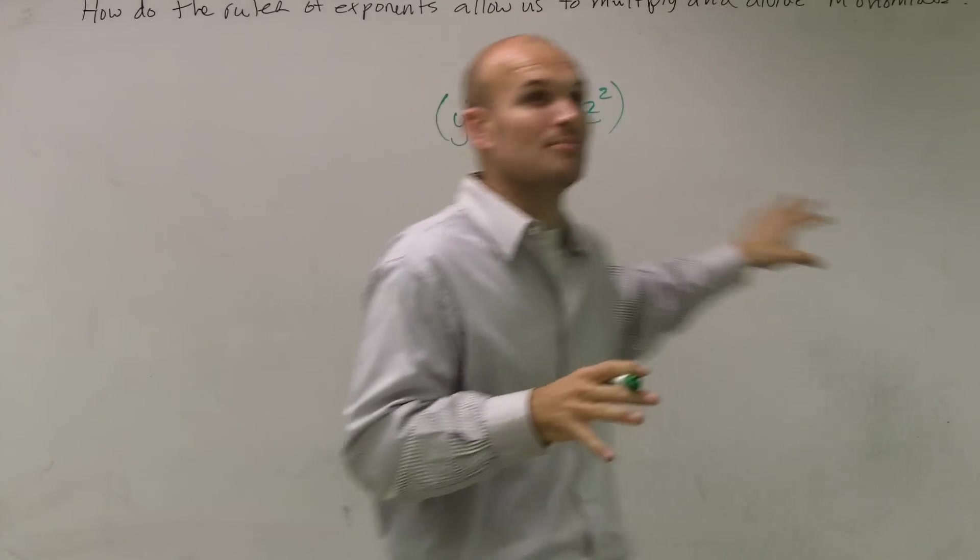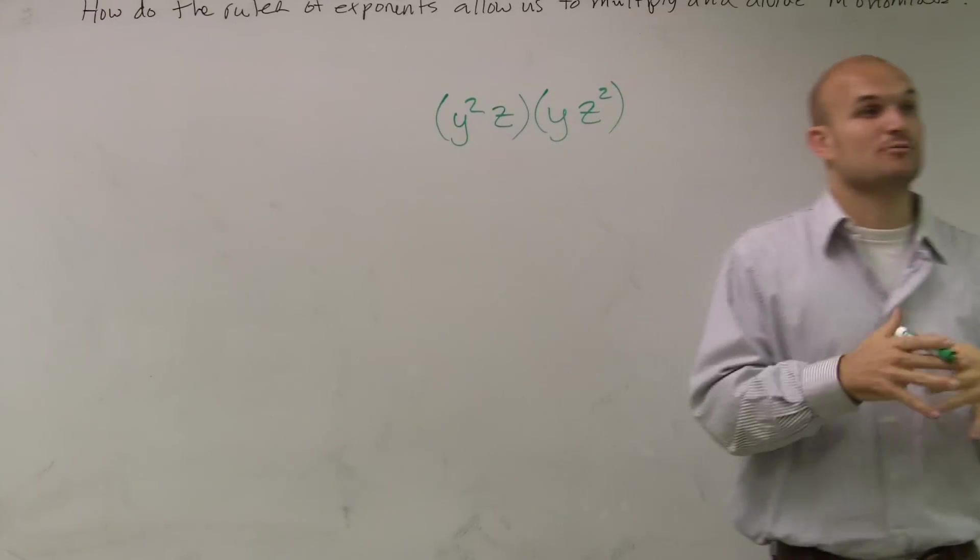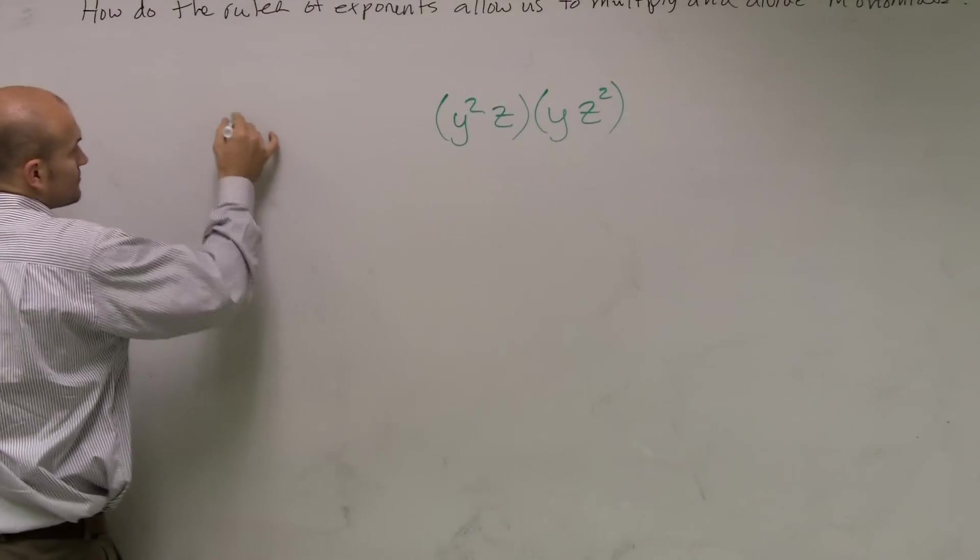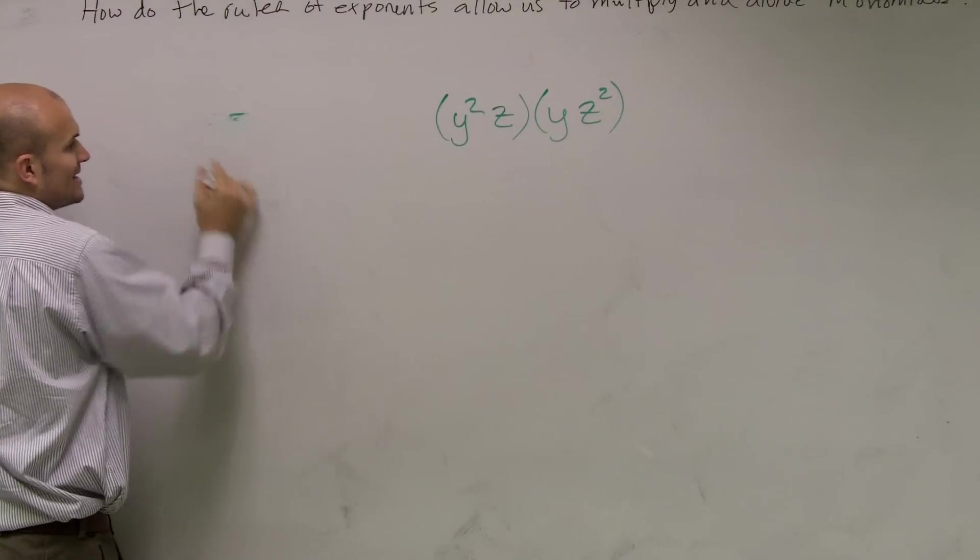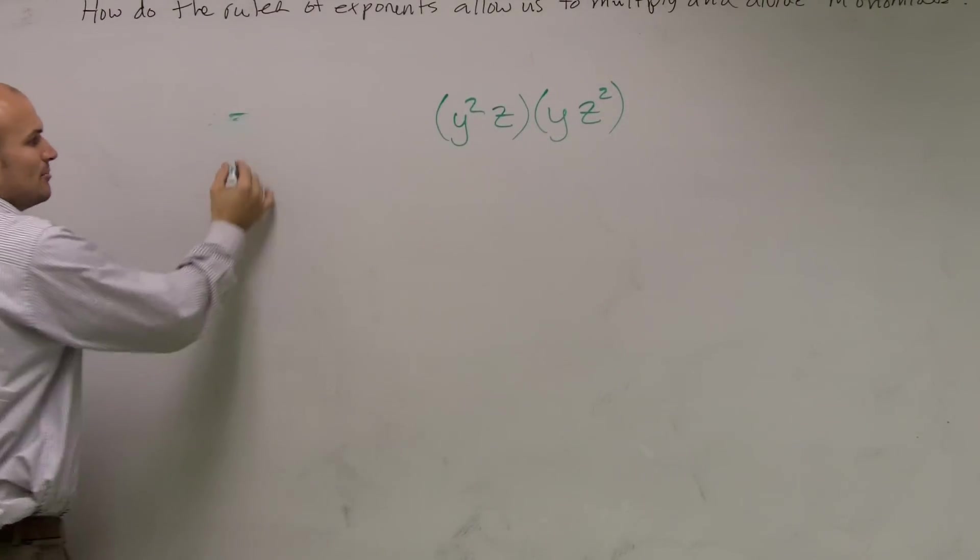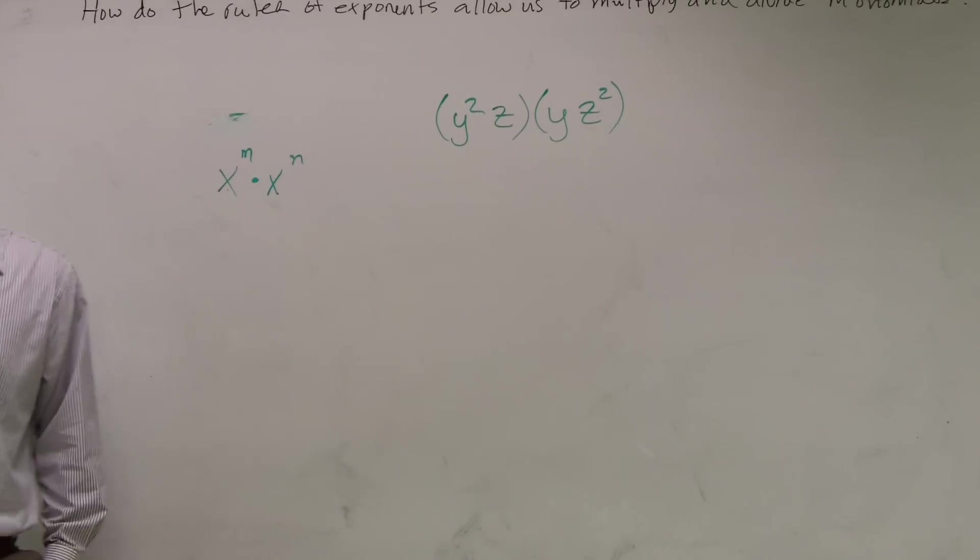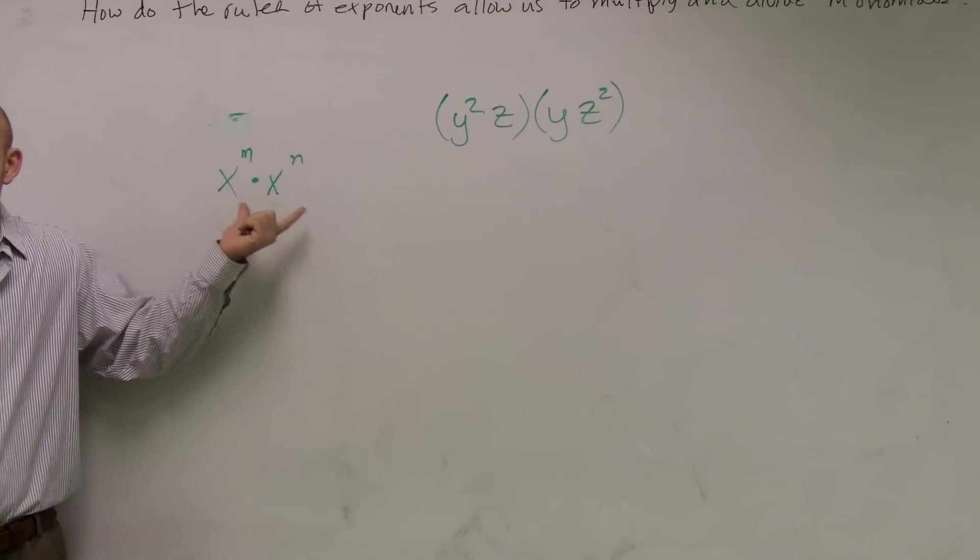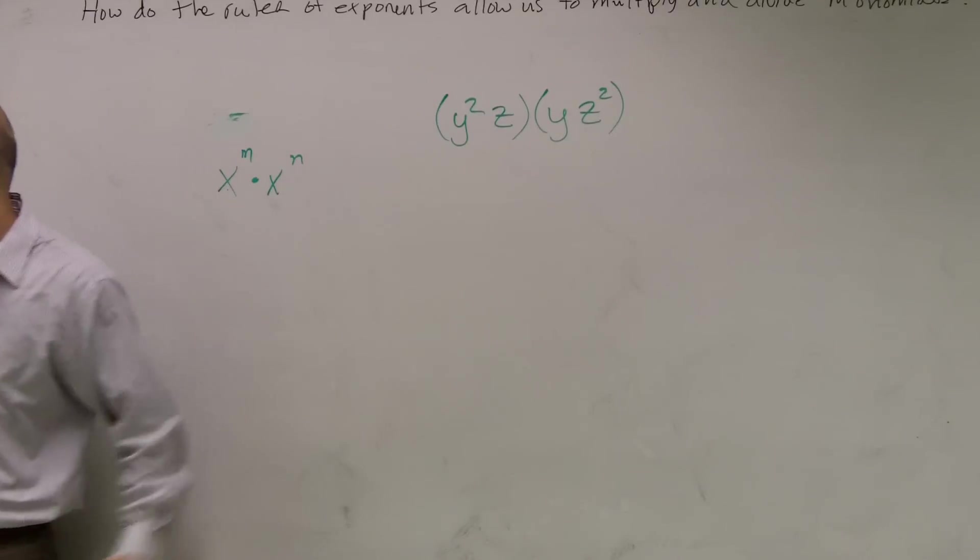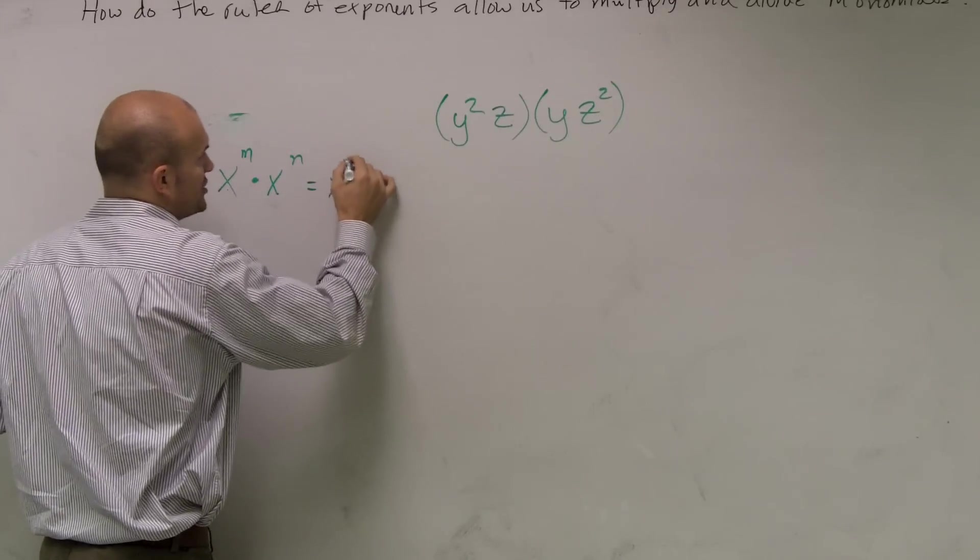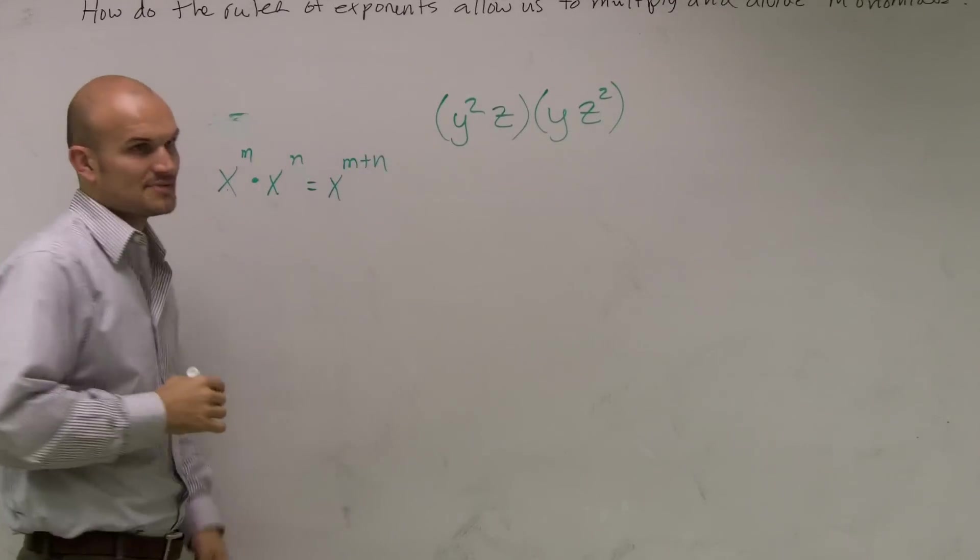When we're multiplying, these are what we call monomials, right? And when we're multiplying monomials, there's a couple rules we really want to make sure we follow. One rule that we said is, if I'm multiplying monomials, or any kind of number to an exponent, as long as my numbers have the same base, here's the rule of exponents, right? As long as they have the same base, all I need to do is add the exponents.